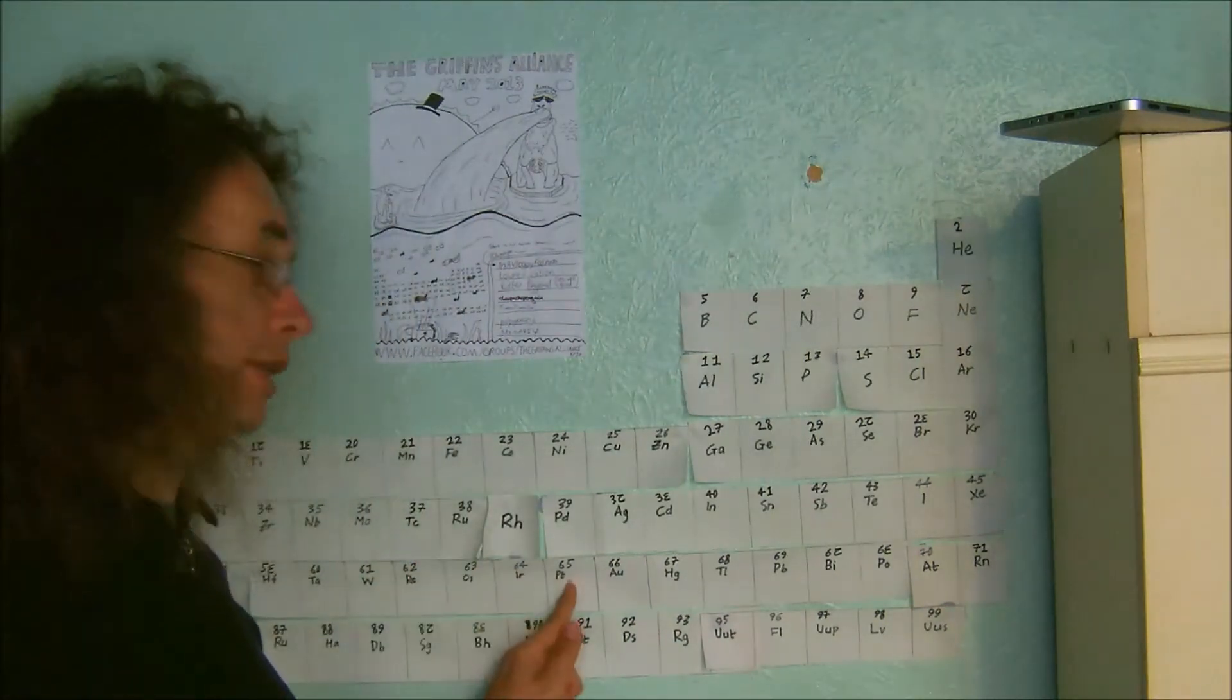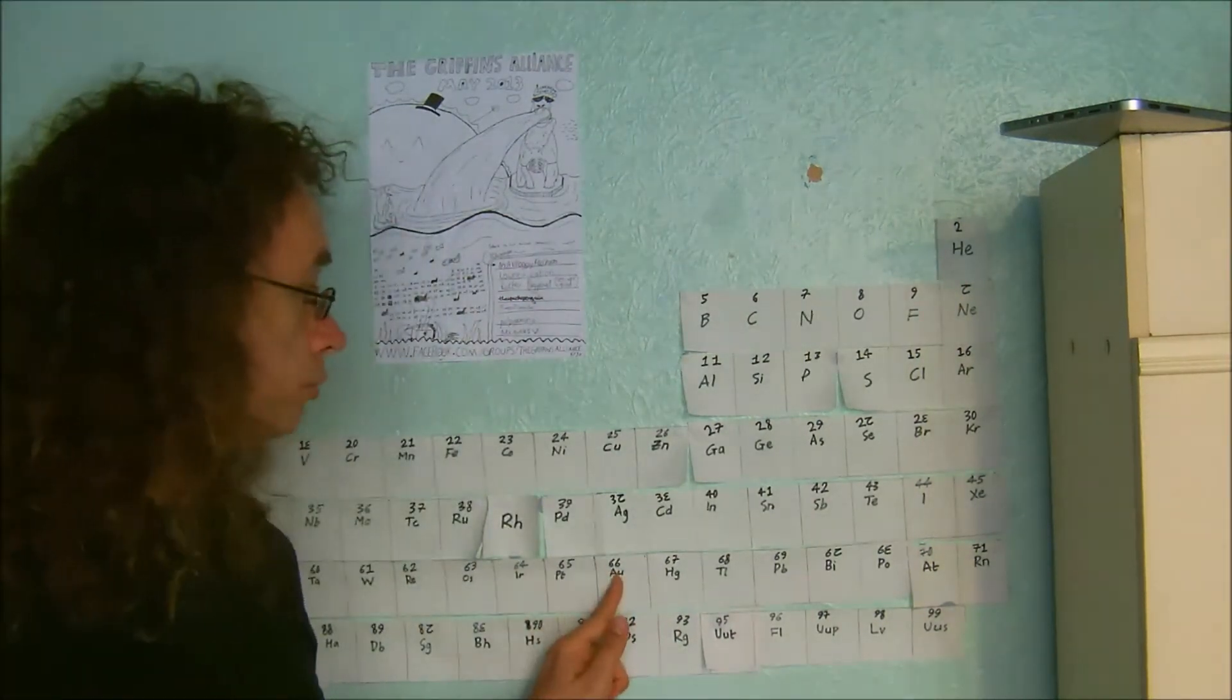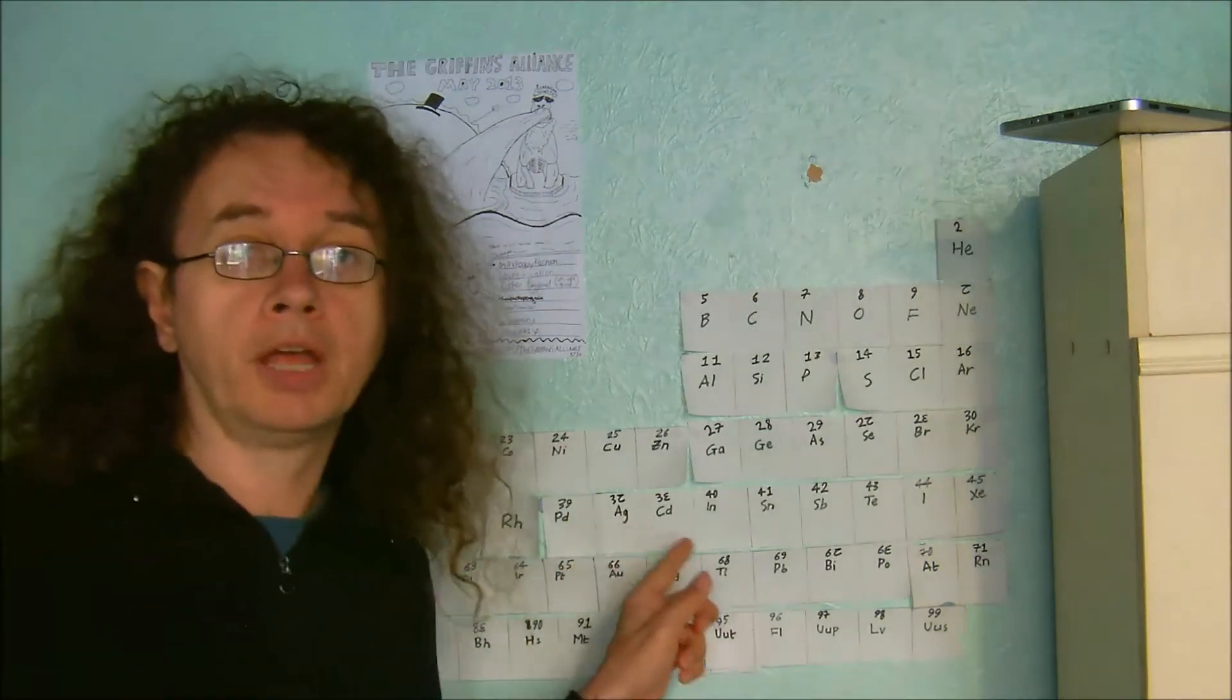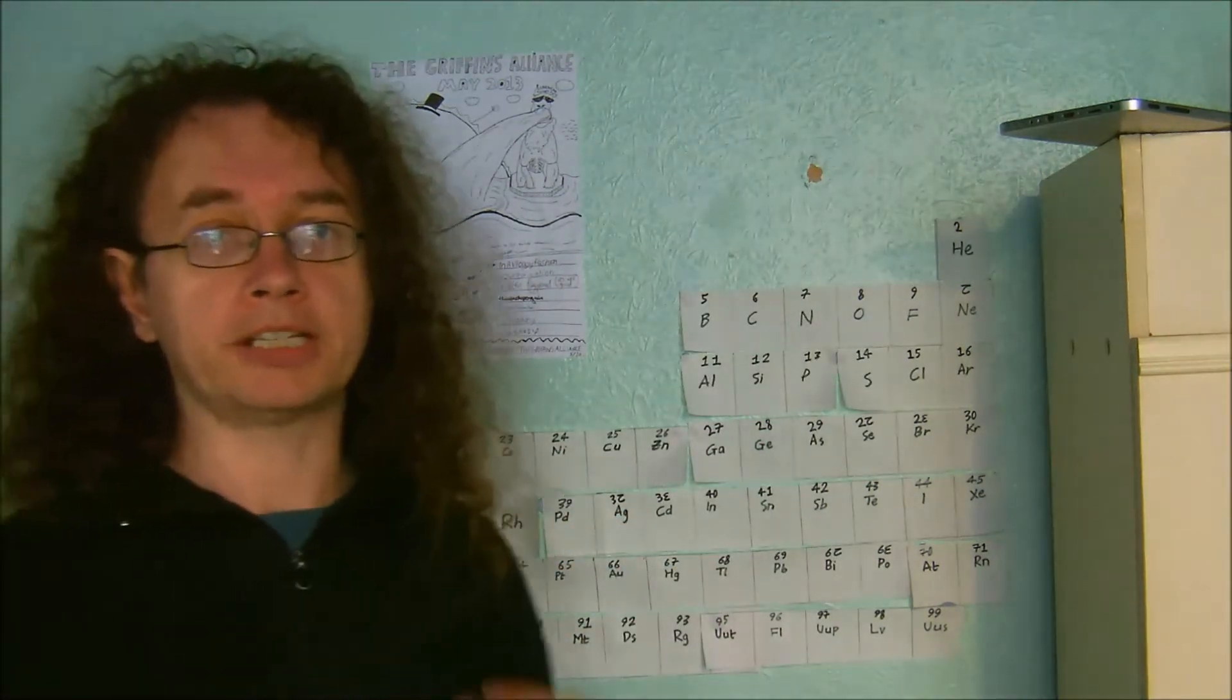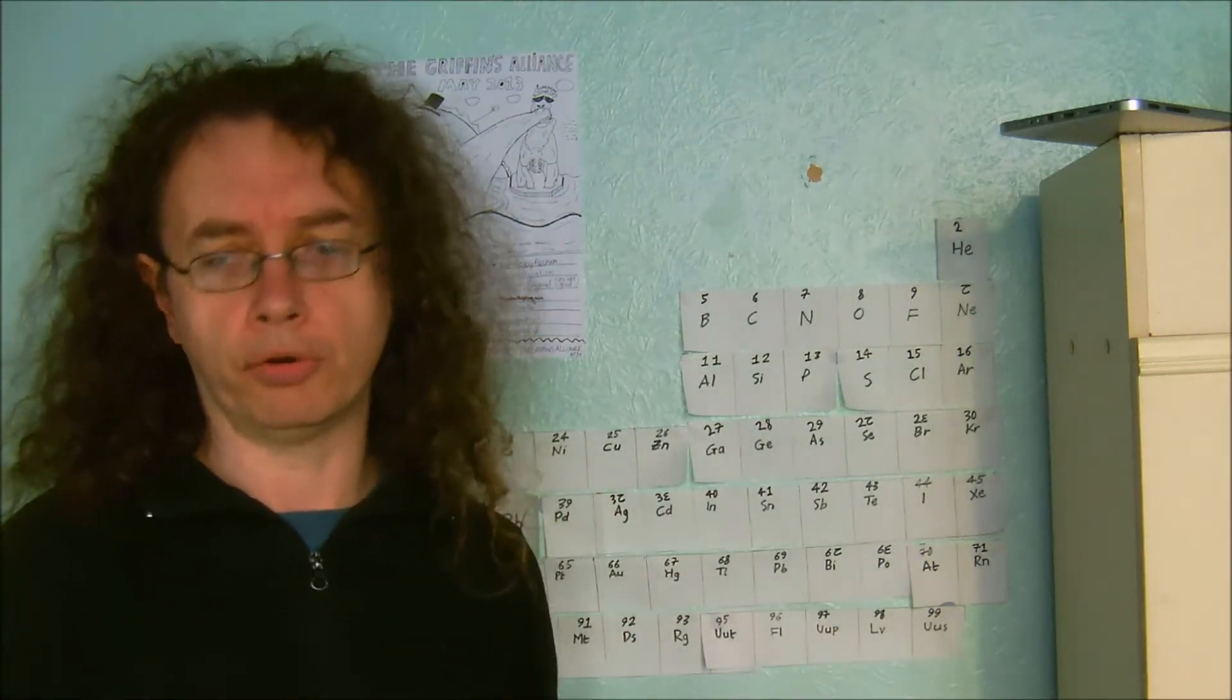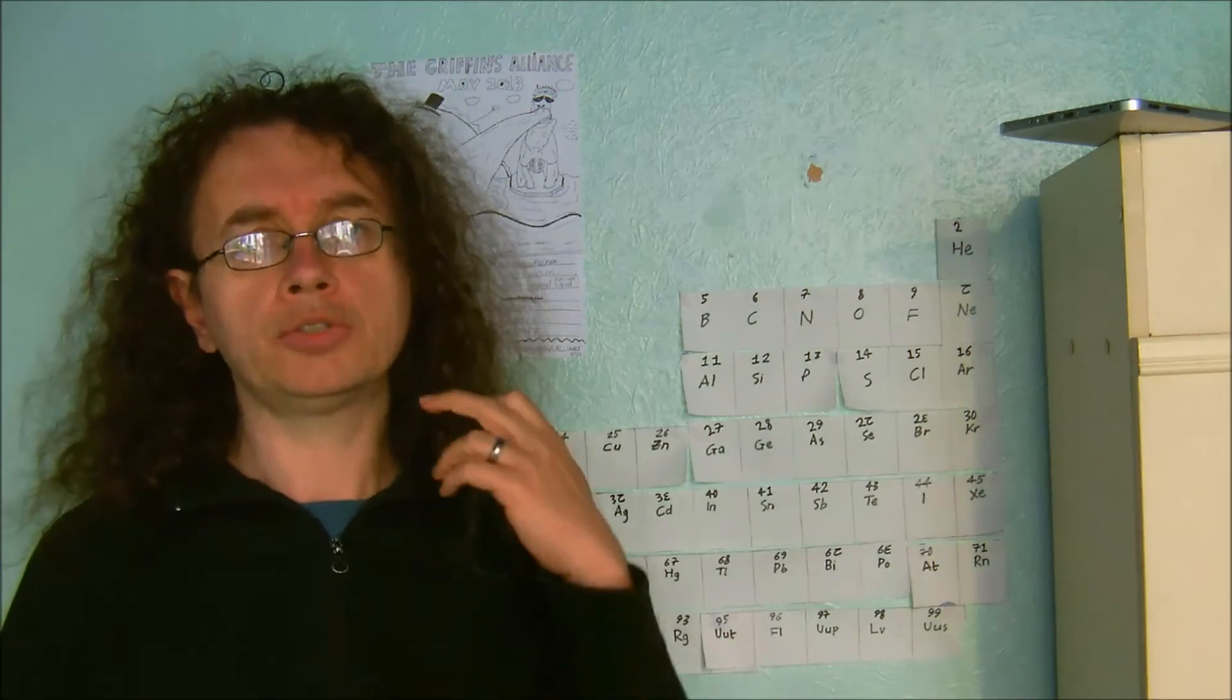The next lot actually doesn't need extracting at all, and that would include things like platinum, gold, and silver. That lot is often found in native form, it's actually found as is, and that makes it a lot easier to get hold of.